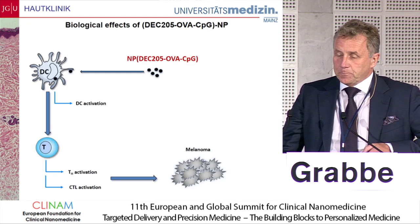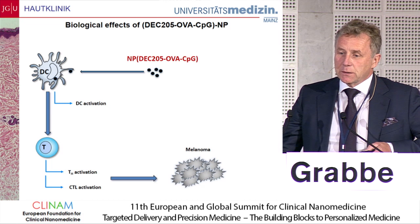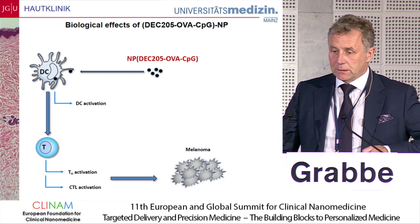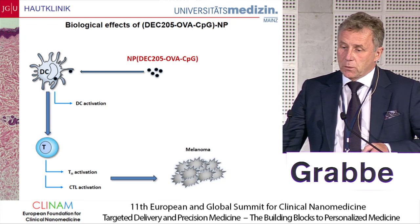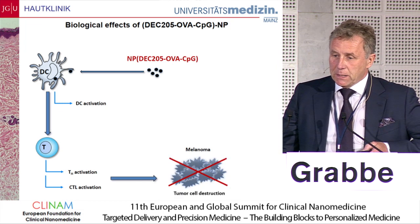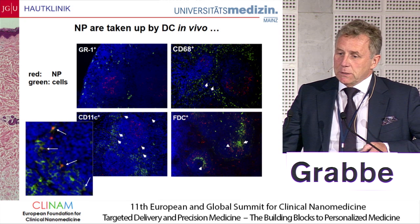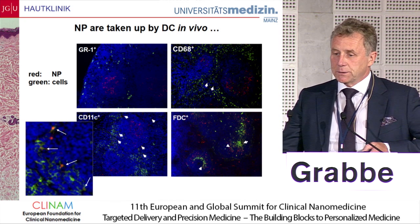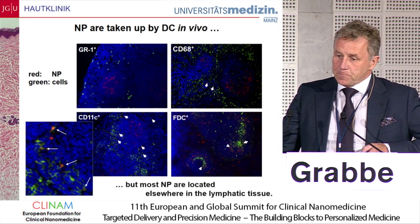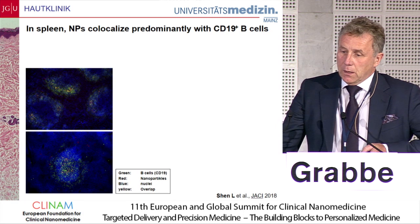We thought the nanoparticles would target dendritic cells, which become activated, present antigens to T cells, leading to T cell activation — both helper cells and CTLs — which would then eradicate the melanoma. But as we investigated the mechanism of action, we realized that while we could detect nanoparticles on dendritic cells in situ, most of the nanoparticles in spleens were located somewhere else.